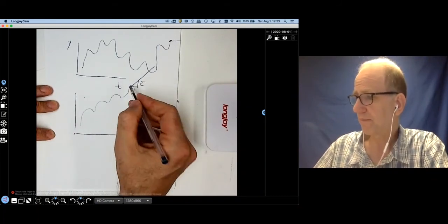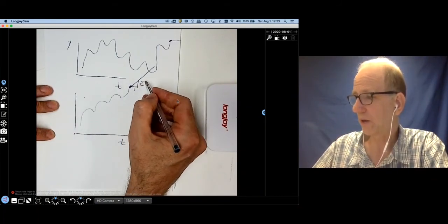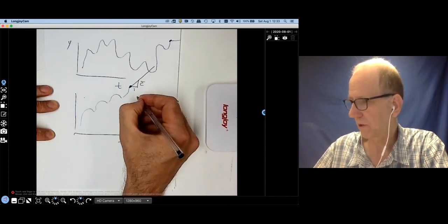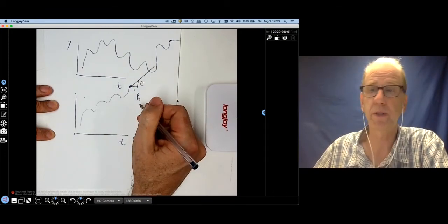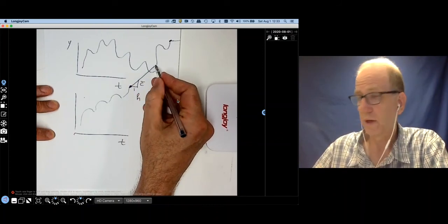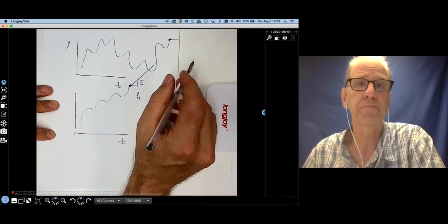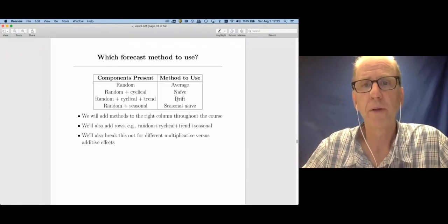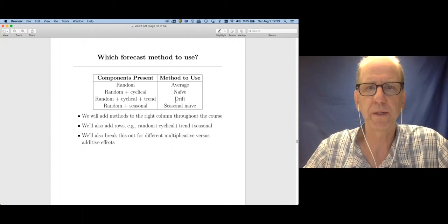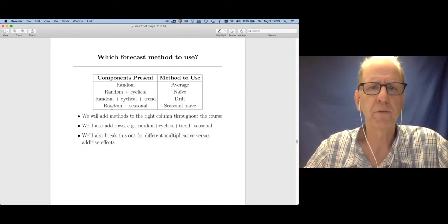So however many periods into the future I need to go, I'm just going to multiply, we've been calling that h, h is the number of periods into the future, times the c bar, which is going to tell me where I think this trend is going. If we think we have a trend present, then go use the drift method.